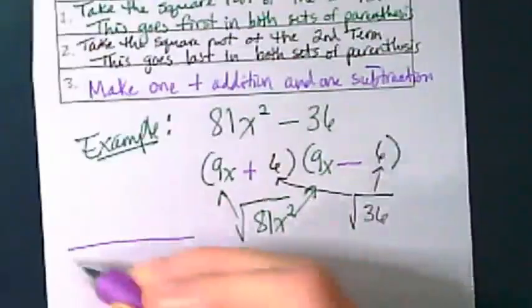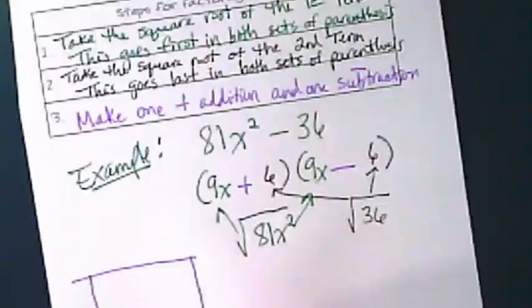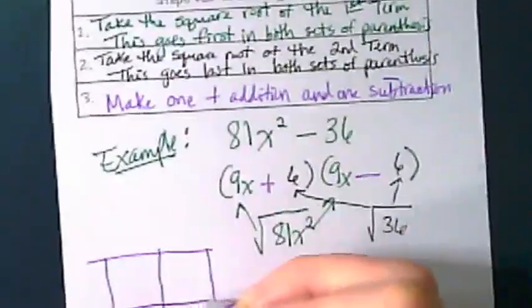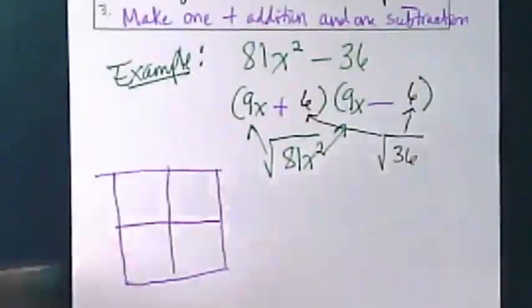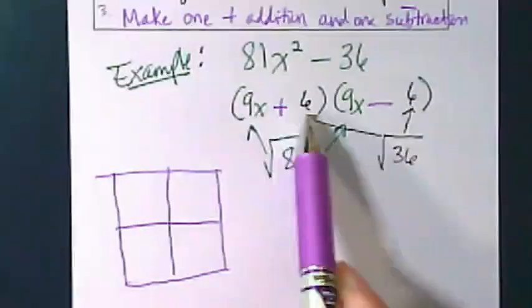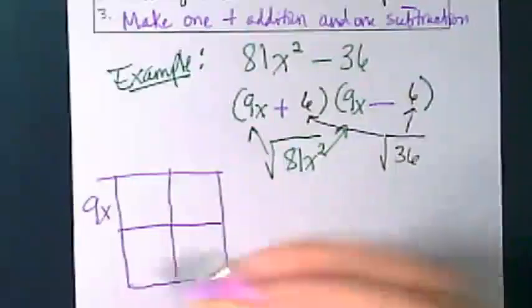Since we've been using boxes to show the relationship, let's do that here. Take the two binomials and place them on the outside.